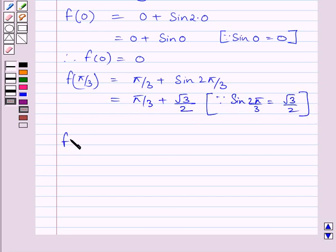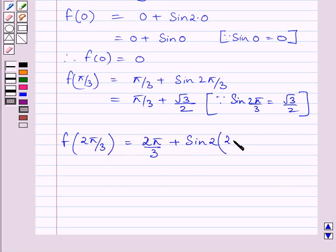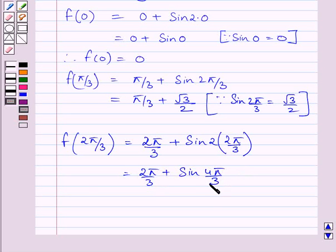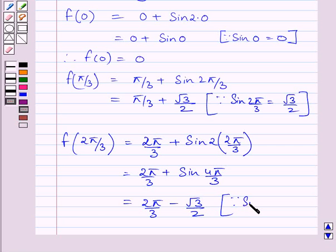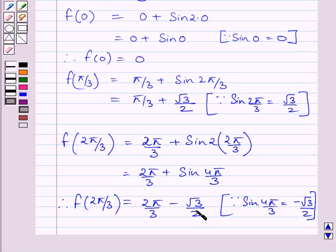Now let us find the value of function f at x = 2π/3. f(2π/3) = 2π/3 + sin(2 × 2π/3) = 2π/3 + sin(4π/3). Since sin(4π/3) = -√3/2, we get f(2π/3) = 2π/3 - √3/2.